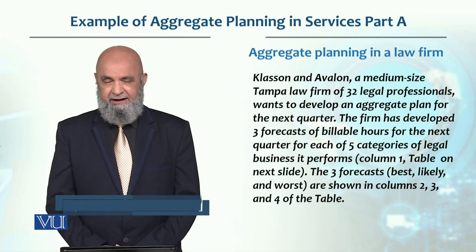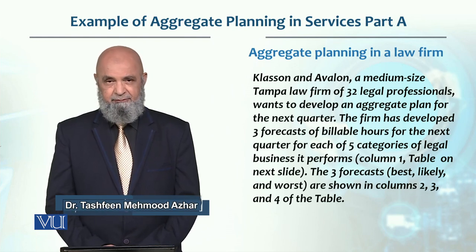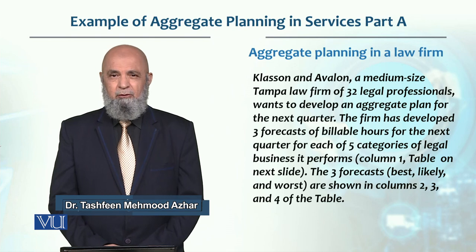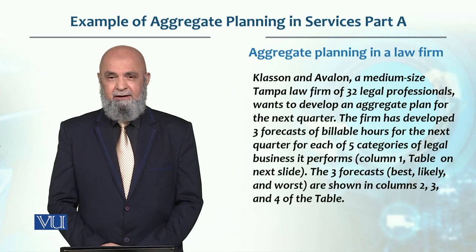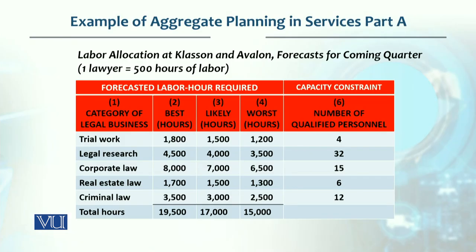They have considered five categories of legal business which they perform, shown in the second, third, and fourth columns of the table. For labor allocation, the assumption is that each lawyer provides 500 hours of labor in a quarter. This applies to all categories including trial work.